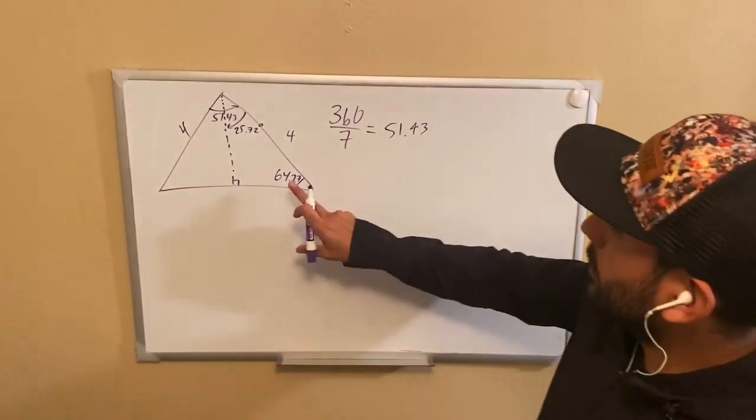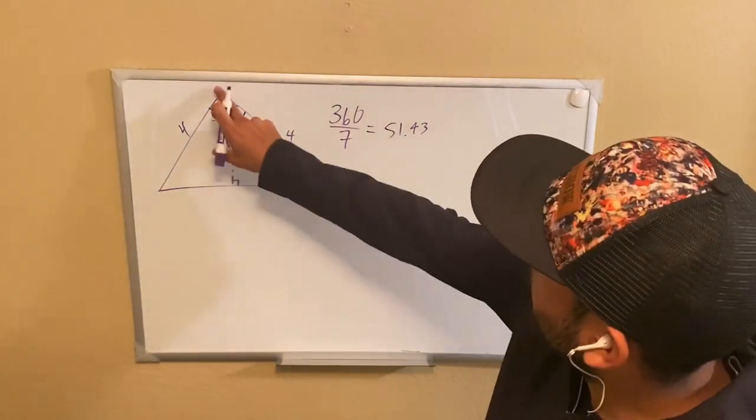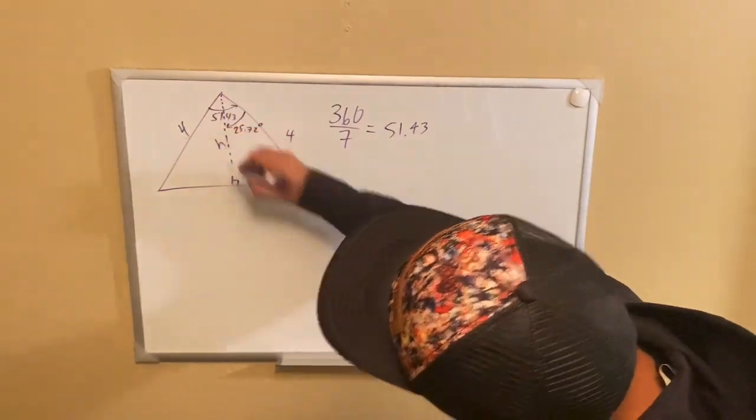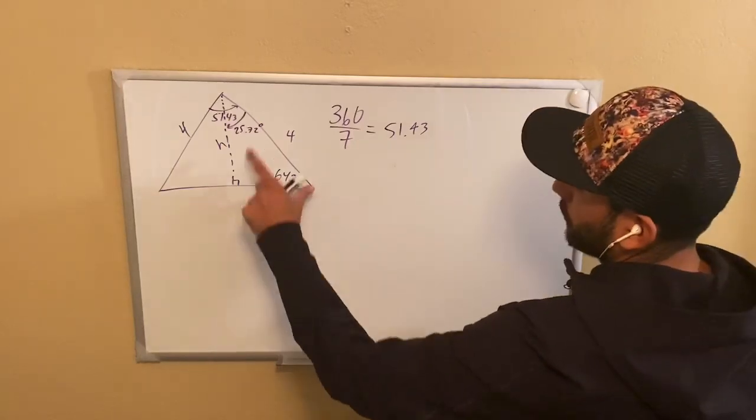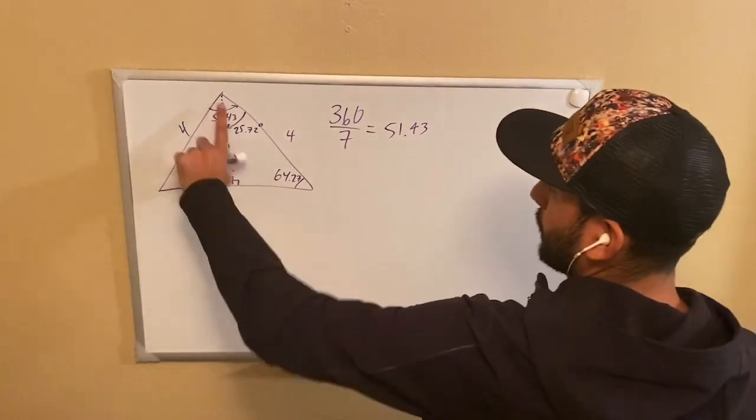Now, let's focus on this angle right here. If this is our angle focus, that's going to be our opposite, this height right here. This is going to be our adjacent, and that's going to be our hypotenuse. So let's go ahead and find this value of H.